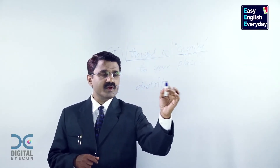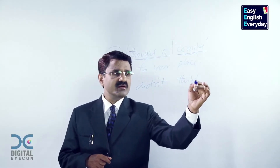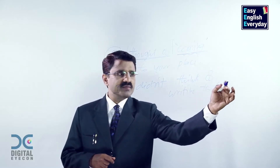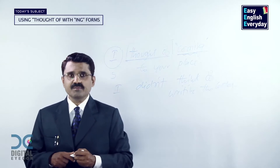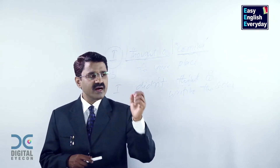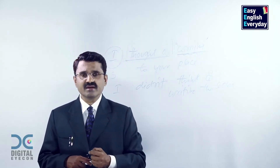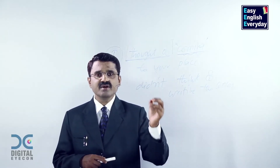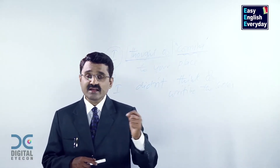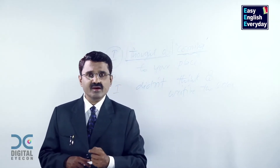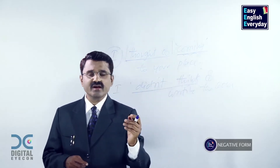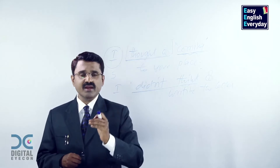I did not think of writing the letter. What does it mean? I did not plan in the past to write the letter. I did not think of writing the letter to you. I did not think of inviting all my relatives. I did not think of dropping my child at the school. I did not think of collecting information. I did not think of buying vegetables from the market. This is the negative form — you are talking about plans which you did not make in the past.